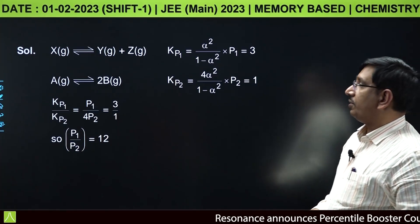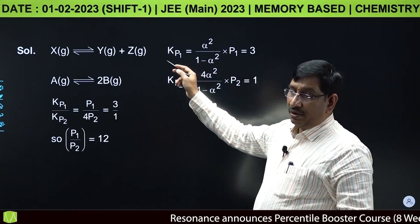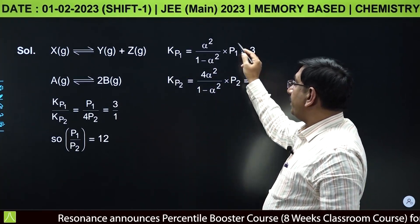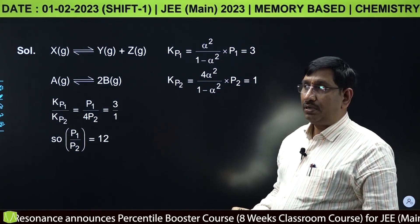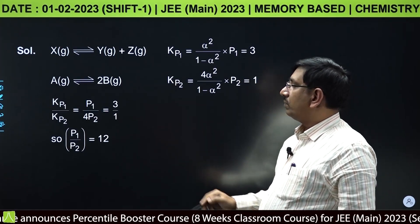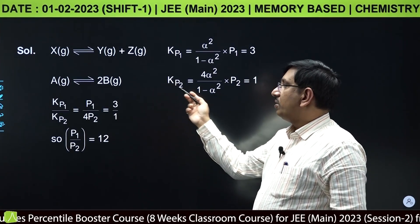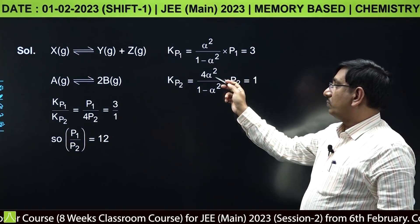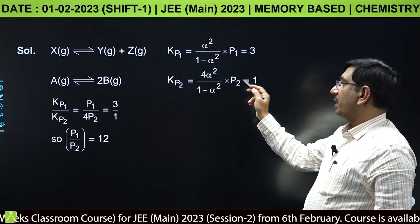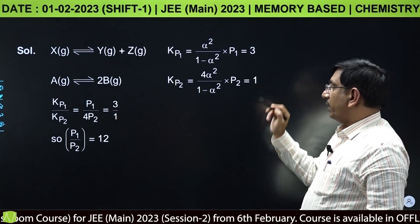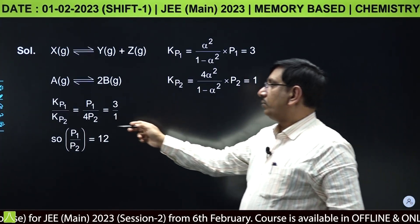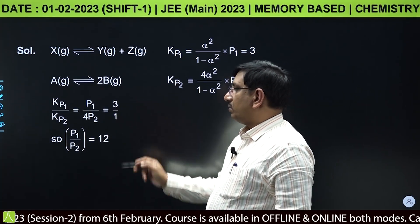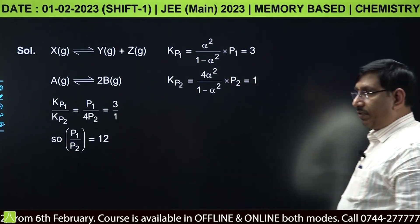For first reaction Kp1 = α²/(1-α²) × P1 = 3. For second reaction Kp2 = 4α²/(1-α²) × P2 = 1. Taking the ratio: P1/(4P2) = 3/1, so P1/P2 = 12.